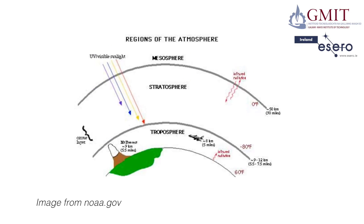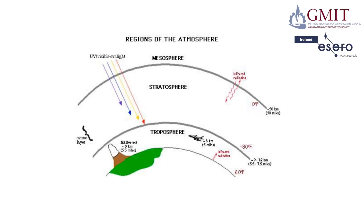Looking at a different drawing of the same thing, the layer inside the mesosphere is called the stratosphere. This layer is important to us on Earth because it contains the ozone layer, which filters out some damaging UV rays. The layer closest to the Earth is known as the troposphere, which extends to about an average of 10km from the Earth's surface. This is the layer within which all weather occurs, and this is the layer within which the CANSAT will operate.